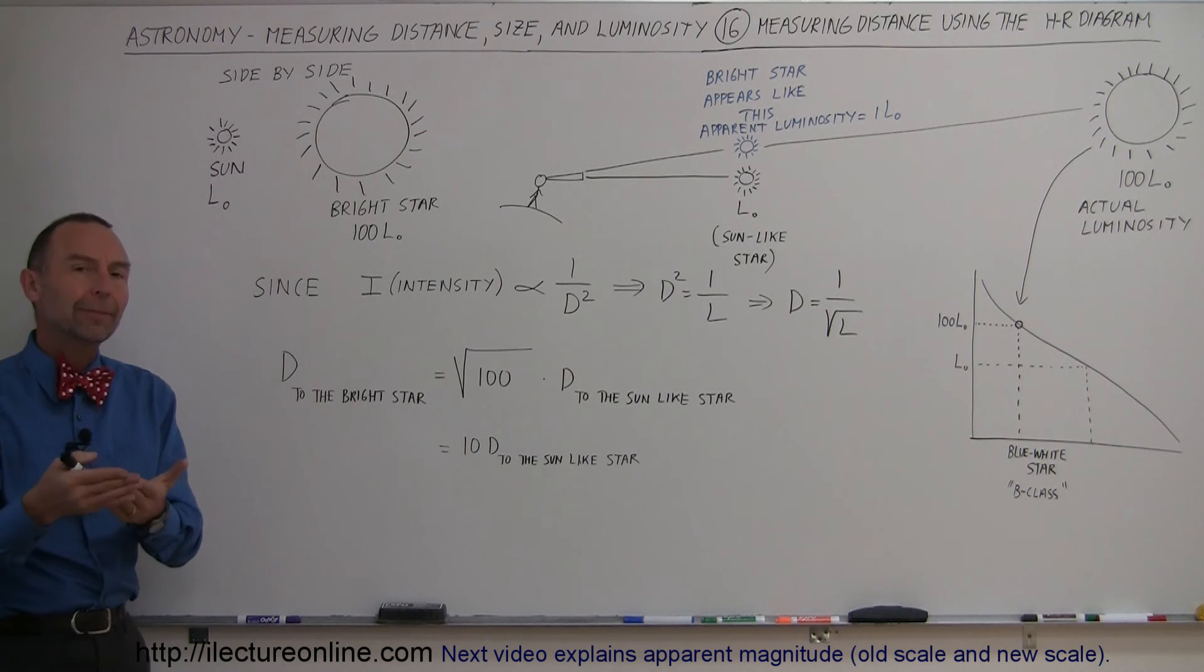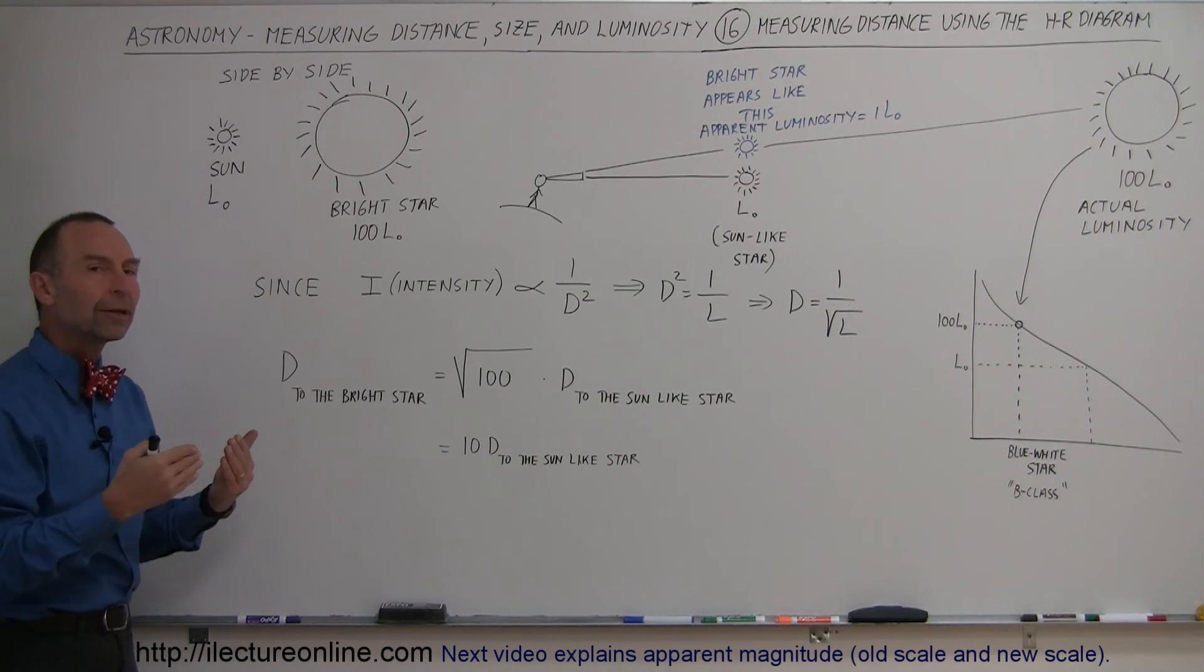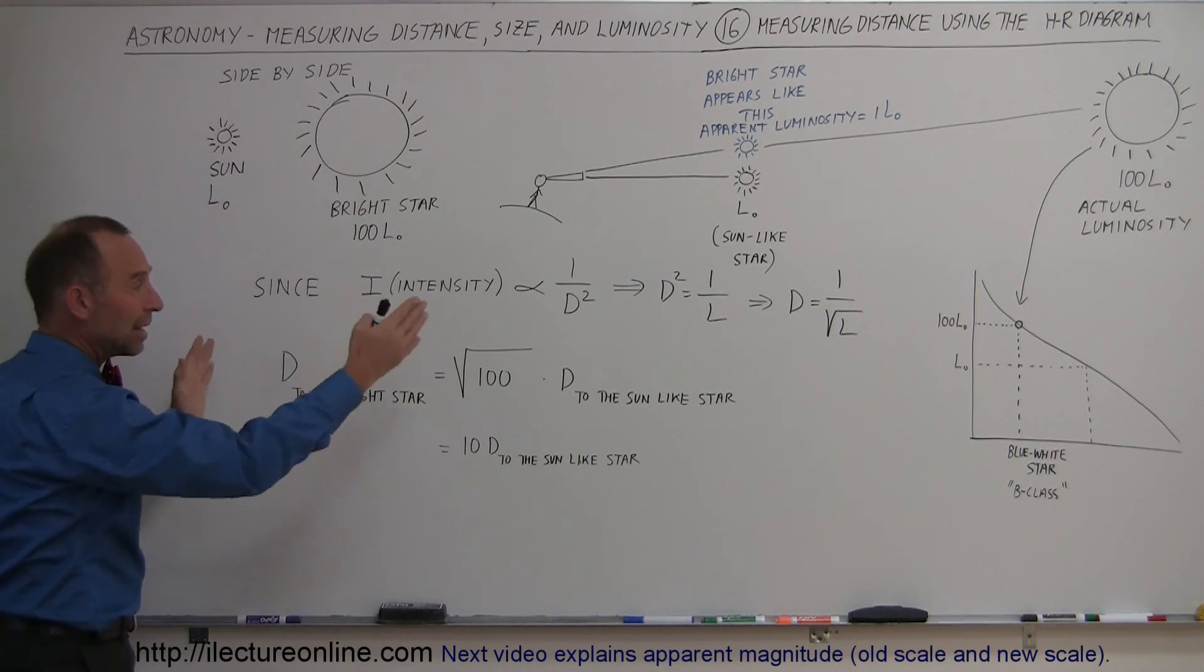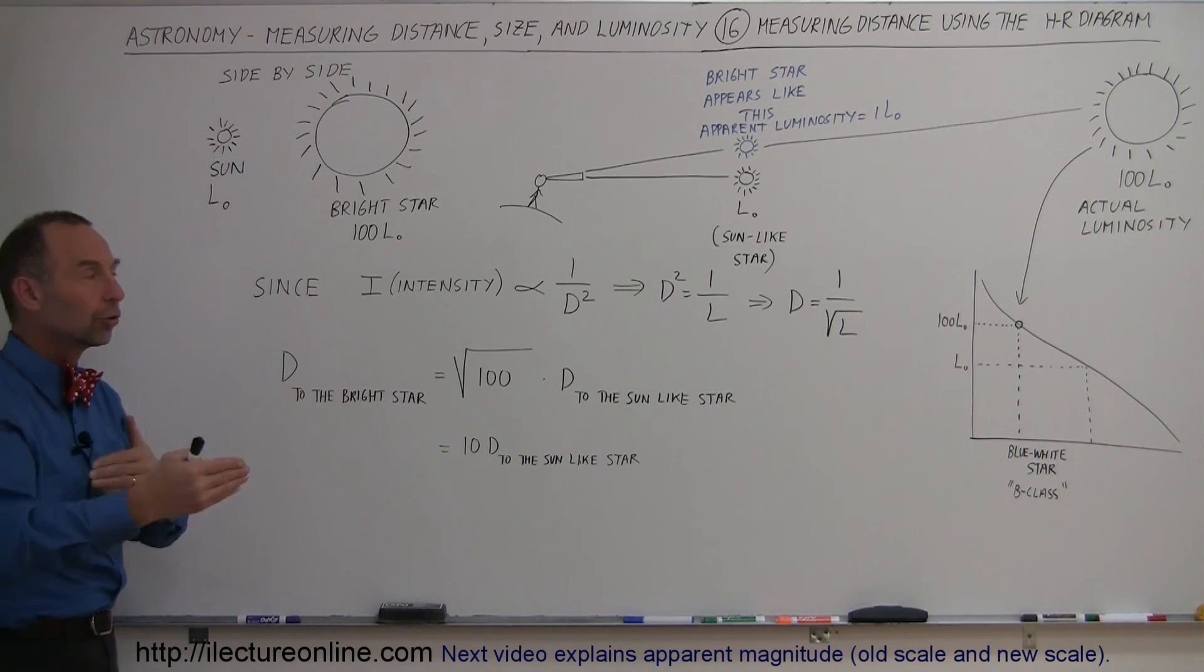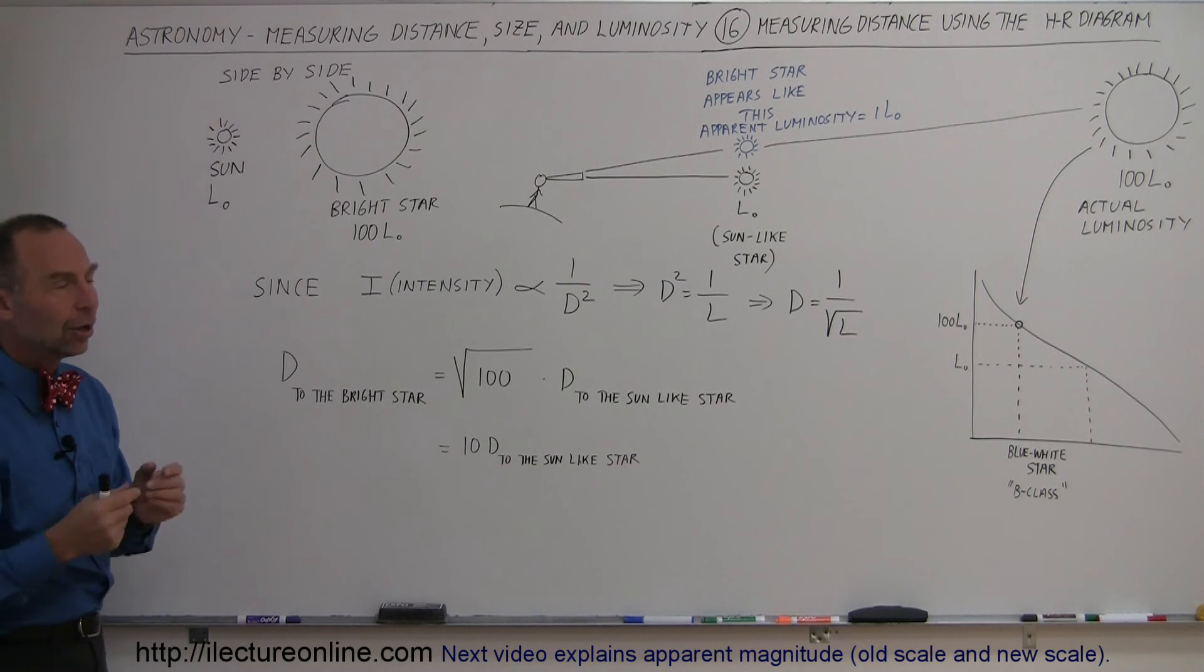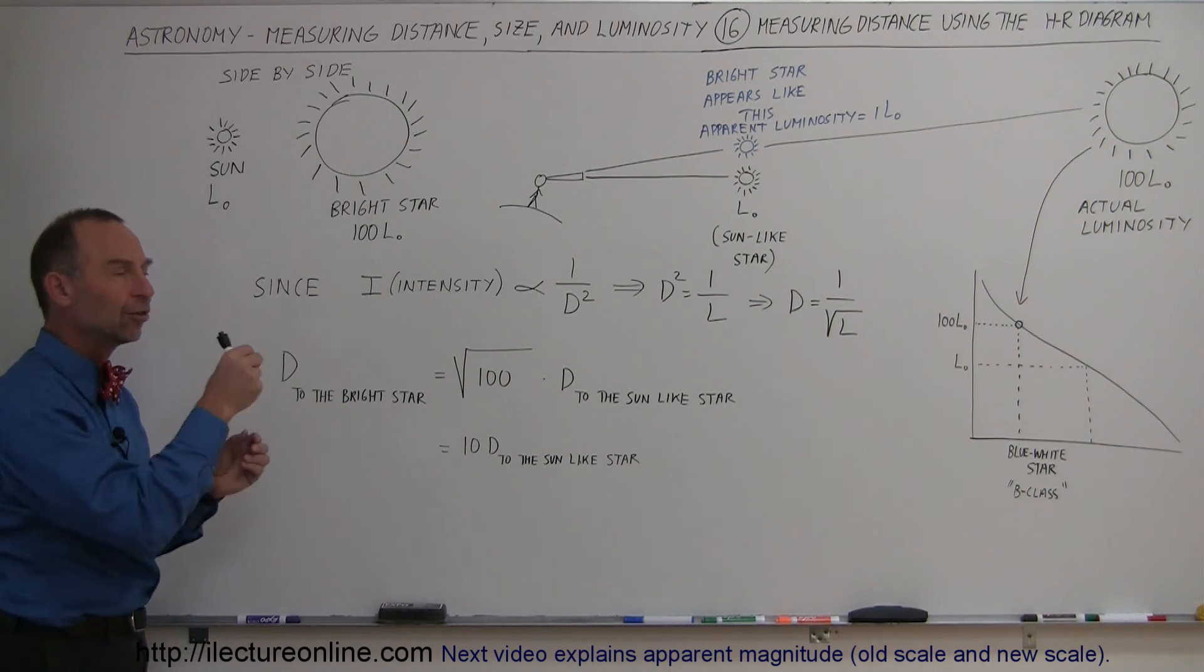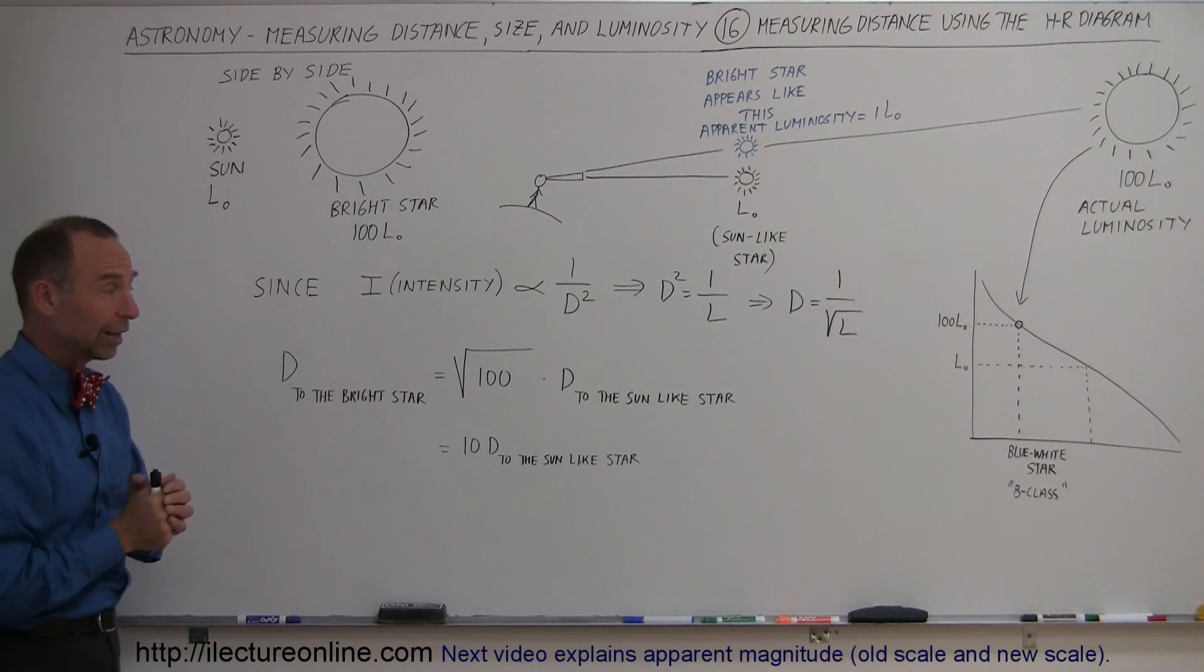We have what we call the apparent magnitude, we have the absolute magnitude, and once we understand that, and we throw that together with the understanding of how we measure the distance from one star to another relative to each other, you can then see how we use the H-R diagram to actually figure the real distance to any star out there that we can measure its brightness thereof.